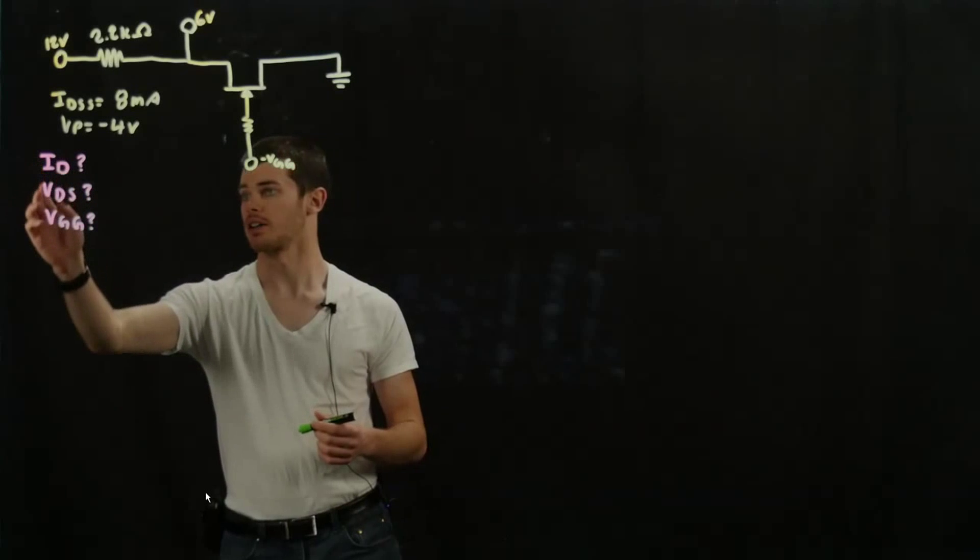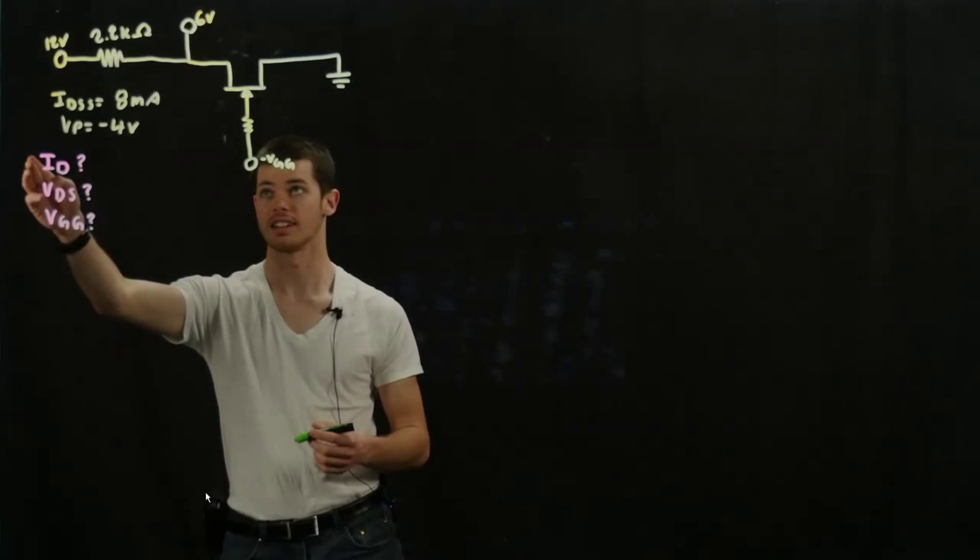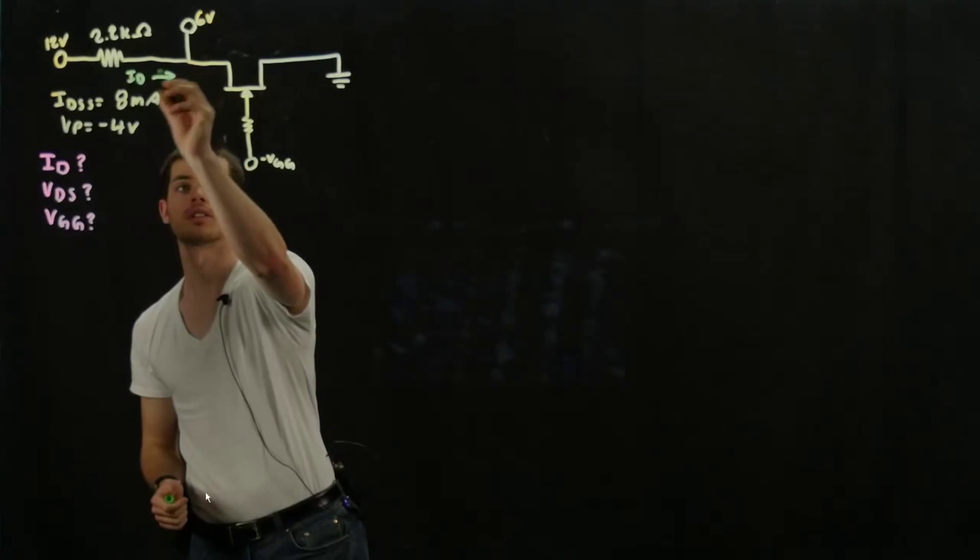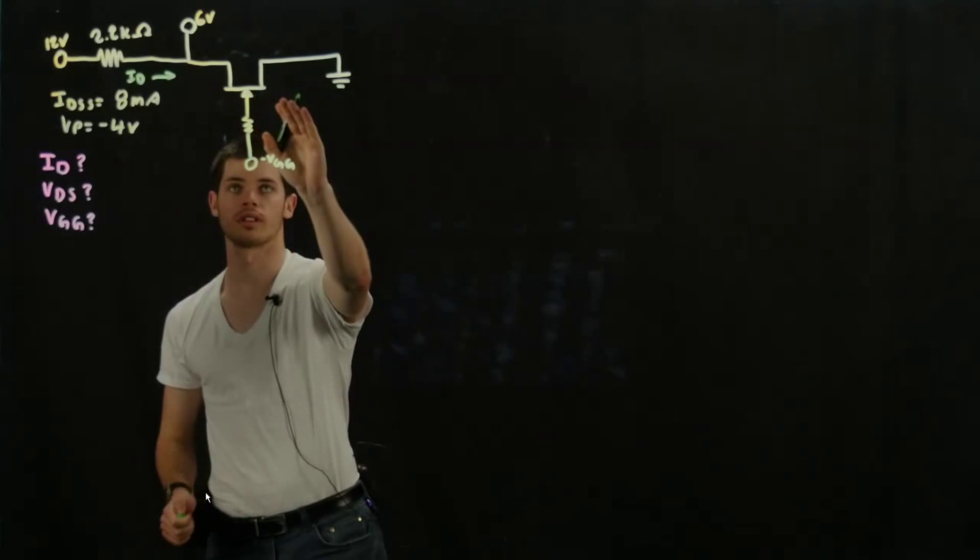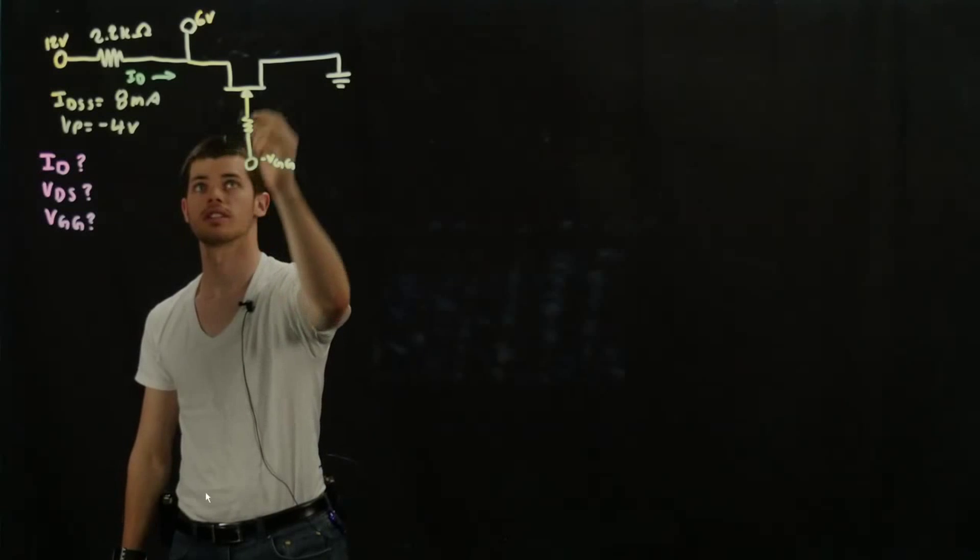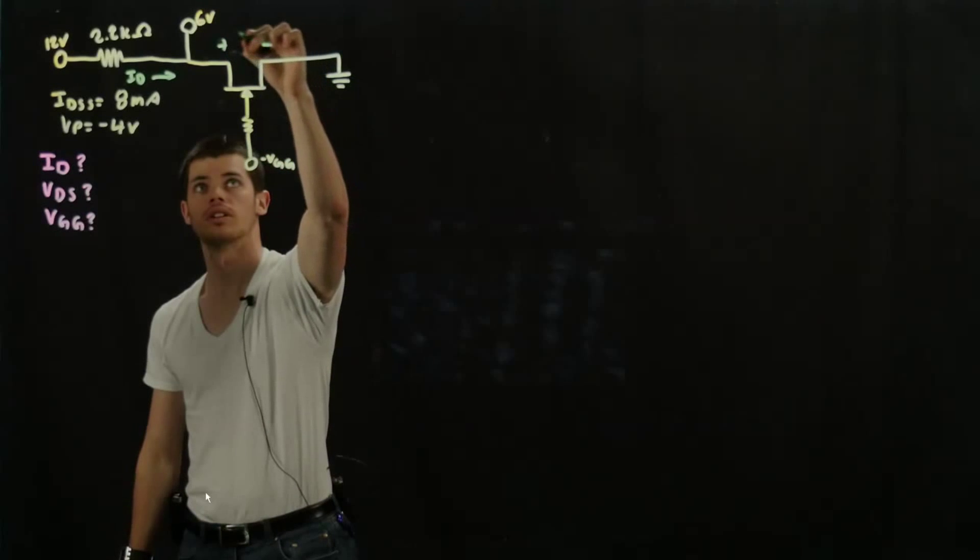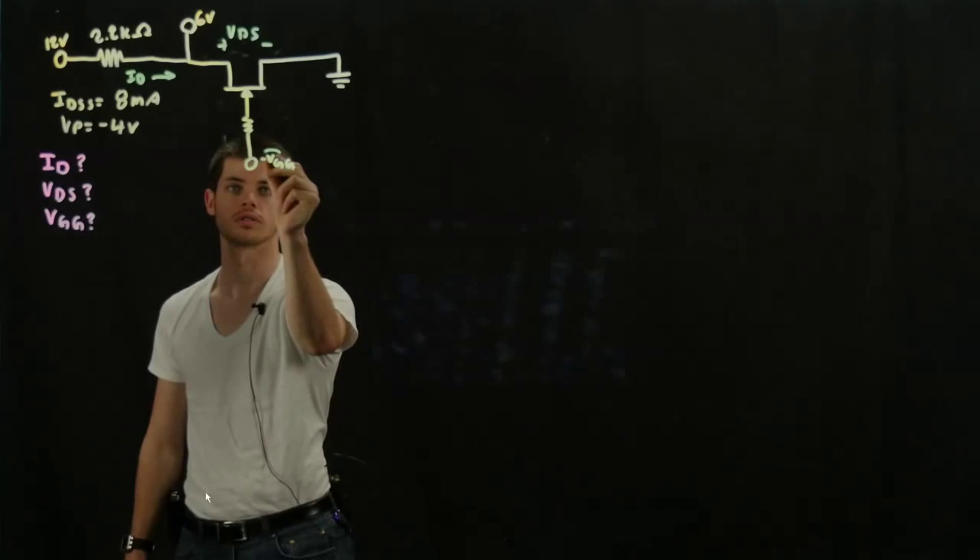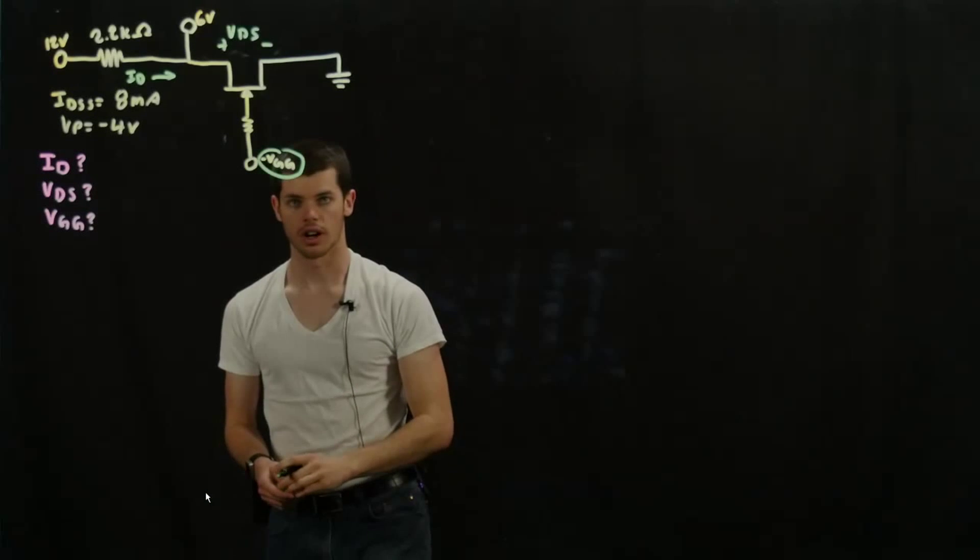And so we're going to want to find three values for the circuit. We're going to find ID, which is this value right up here, so it's the physical current going through the JFET. We're going to want to find VDS, which is the current drop, and then VGG, which is right here.